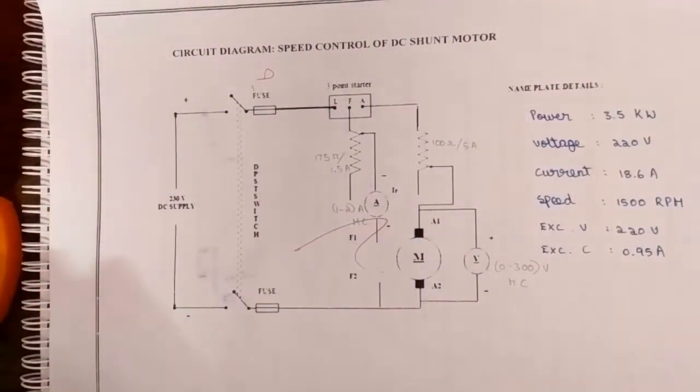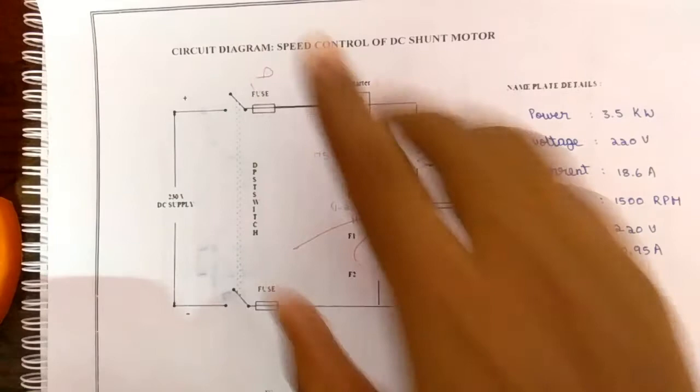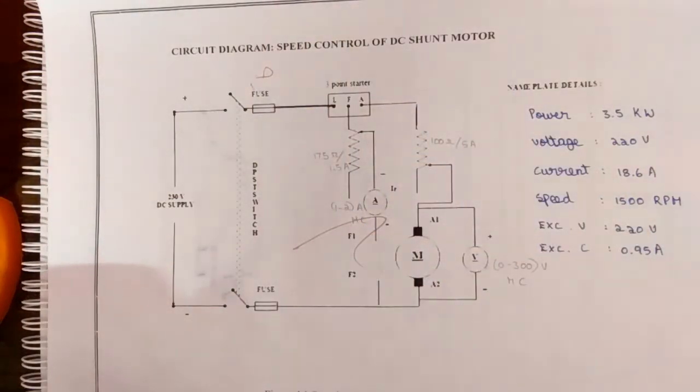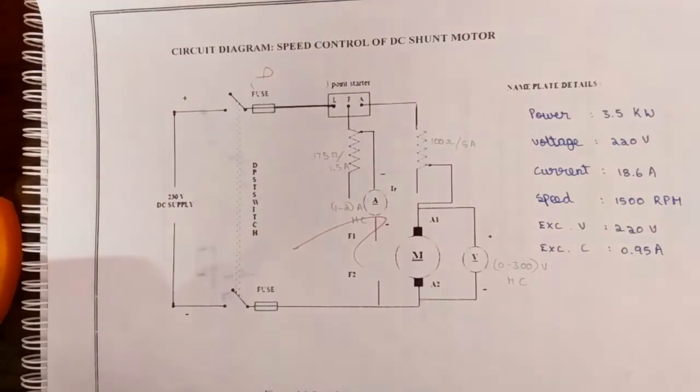Before moving to the procedure, first the precautions we should take care is that the fuse is selected in such way that its rating is 120% of the no-load current. The spring balance should be kept at zero position throughout the experiment. The motor field rheostat should be kept at minimum position at the time of starting.